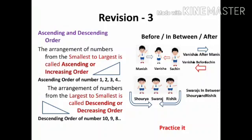The arrangement of numbers from largest to smallest is called descending or decreasing order. For example, descending order of numbers like 10, 9, 8 means big to small.